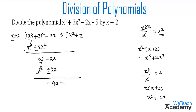Now let us bring the constant term -5 down, giving the new dividend as -4x - 5. The first term is -4x. Dividing it by the first term of the divisor x, we get -4x ÷ x, and x cancels, leaving -4, which is the last term of the quotient.